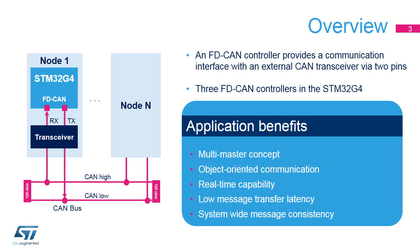The Flexible Data Rate Controller Area Network is a standard serial differential bus broadcast interface that enables the microcontroller to communicate with external devices connected to the same network bus. The FDCAN interface is highly configurable, enabling nodes to easily connect using just two wires. Applications benefit from a multi-master concept with message priority, object-oriented communication, i.e. no node addressing but content identification, real-time capability with low message transfer latency and system-wide message consistency, i.e. error detection and management mechanism. The STM32G4 microcontroller embeds three FDCAN controllers.